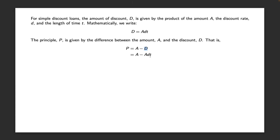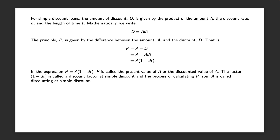If we replace D in terms of A we get P = A - A·d·T, or factoring out the A, this gives us P = A(1 - dT). In this expression, P is called the present value of A, or alternatively the discounted value of A. The factor (1 - dT) is called the discount factor at simple discount, and the process of calculating P from A is called discounting at simple interest.